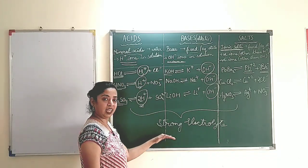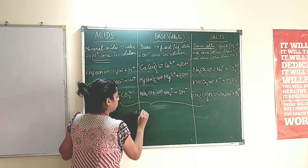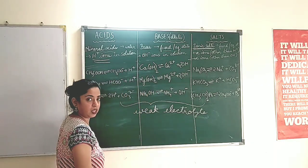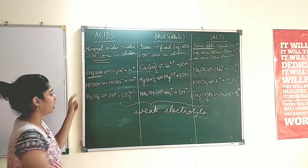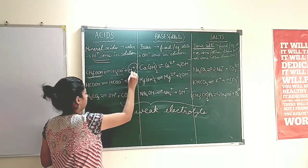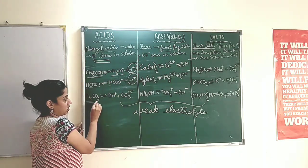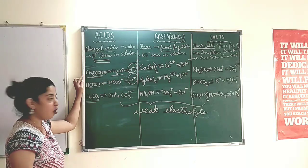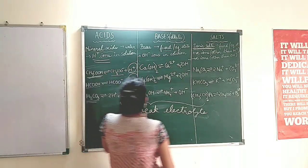Now I will show you a few weak electrolytes in all three categories. Weak electrolytes dissociate partially to give out ions. The first example in acids is acetic acid, which dissociates to give acetate ions (CH3COO-) and 1 H+ ion. Formic acid gives HCOO- and H+ ions. Carbonic acid gives 2H+ ions and CO3 2- ions. So acetic acid, formic acid, and carbonic acid are examples of weak electrolytes.